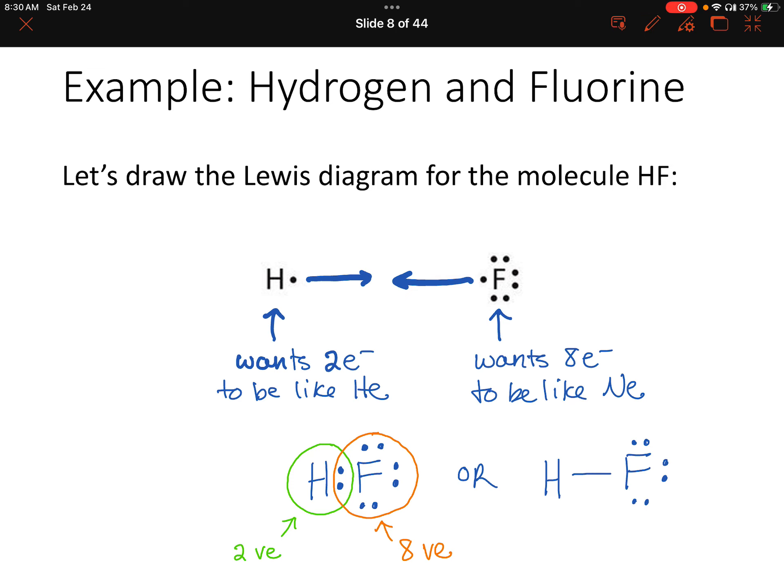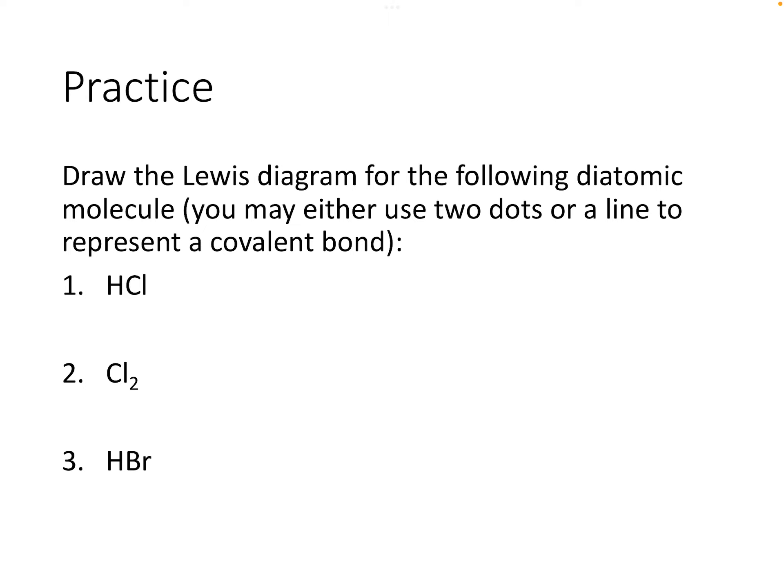Let's do a practice problem. Draw the Lewis diagram for the following diatomic molecules. You can use either two dots or a line to represent a covalent bond. First, see how many valence electrons each atom has, then try to pair up any unpaired electrons. Pause the video to try it on your own, then unpause and we'll go over it together.